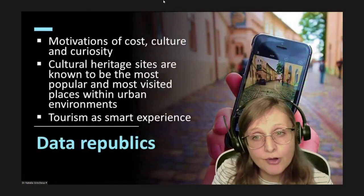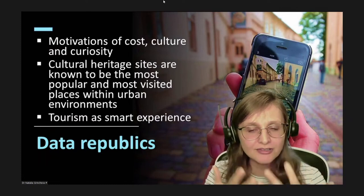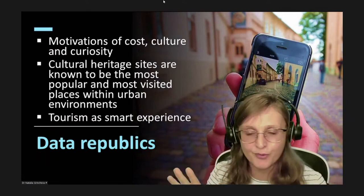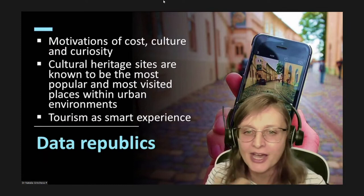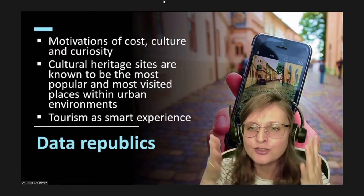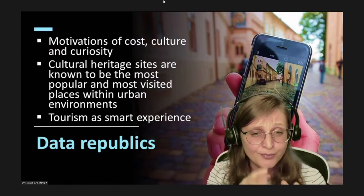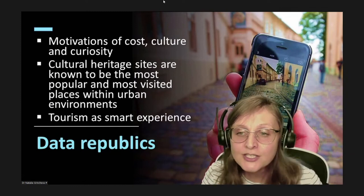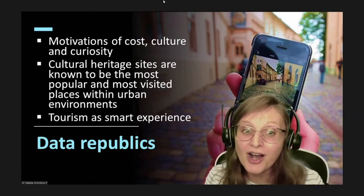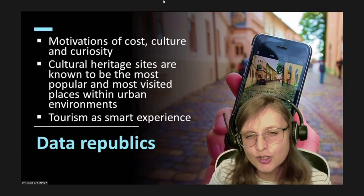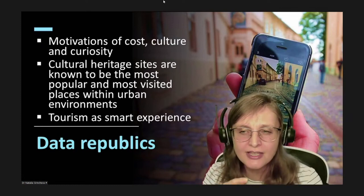In tourism development, the power of urban attractions capitalizes on participants' motivations of cost, culture, and curiosity. Cultural heritage sites are known to be the most popular and most visited places within urban environments. However, a contemporary traveler demands smart capabilities to have a fully connected experience from hotel check-ins to GPS navigation around town and immediate access to the things they want to see during a very limited short period in a specific city. Smart city technologies developed in conjunction with museums can enable more sustainable and cultural tourism. Smart maps, wayfinding applications, or journey planners can enhance urban experience if they organically integrate information about museums, heritage sites, and other leisure attractions.